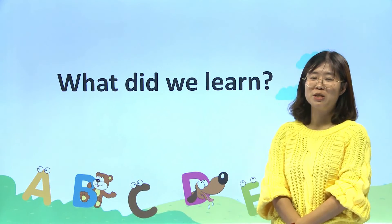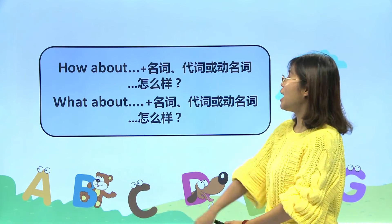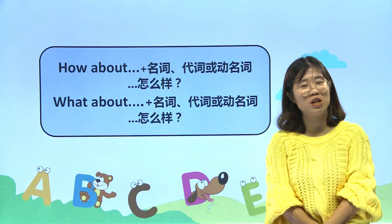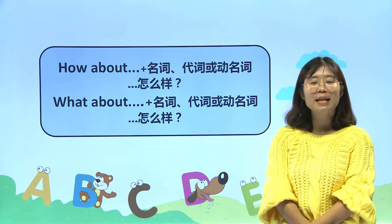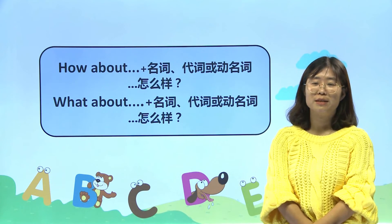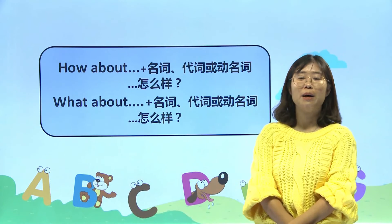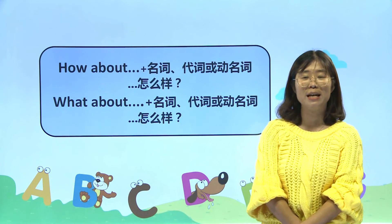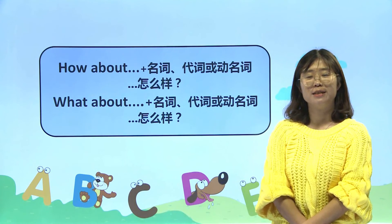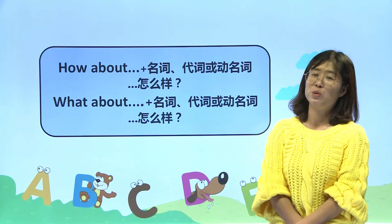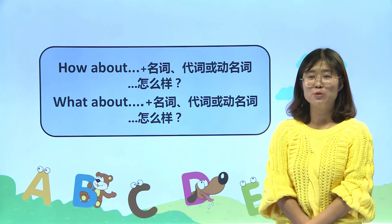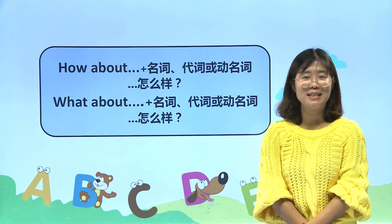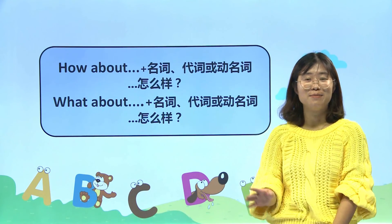好，同学们，我们这节课主要讲了什么知识点呢？主要讲了how about跟what about这个句型，表示提建议。这两个疑问词后边都可以加名词、代词以及动名词，表示这件事情怎么样？做这件事情如何呢？好，同学们，这节课老师就给大家讲到这里，我们下节课再见。See you next time.